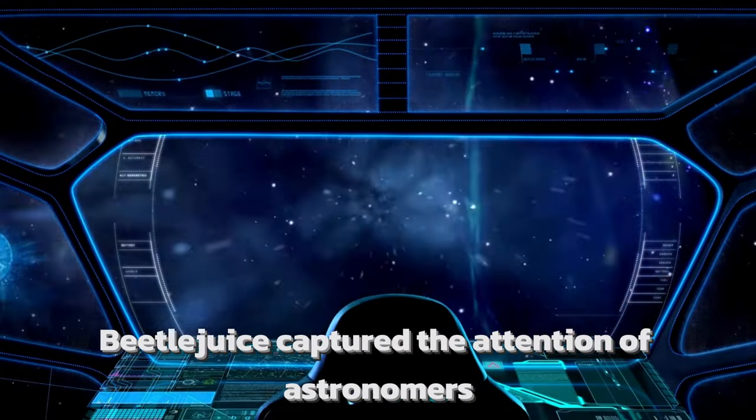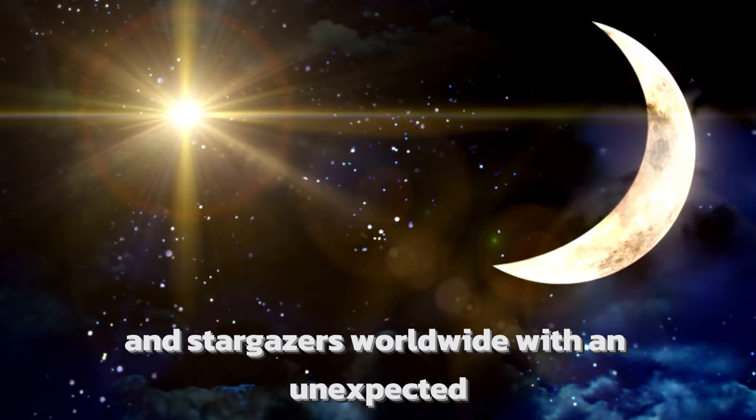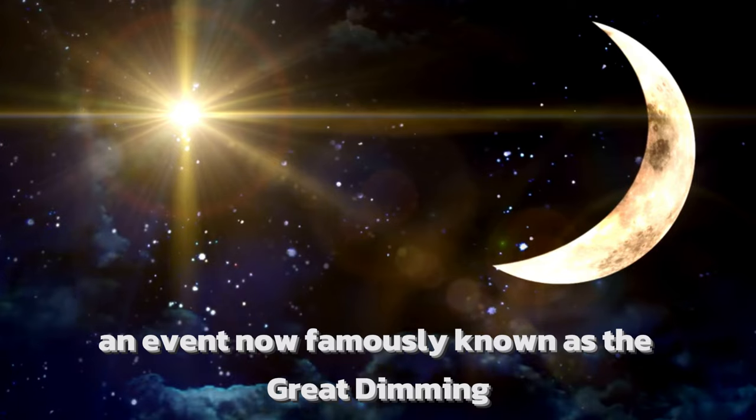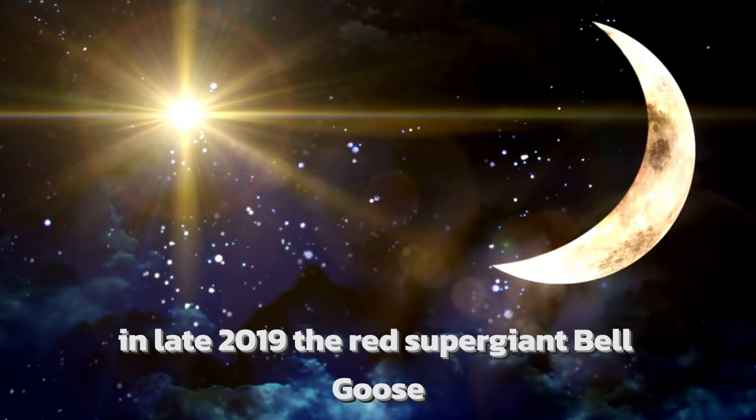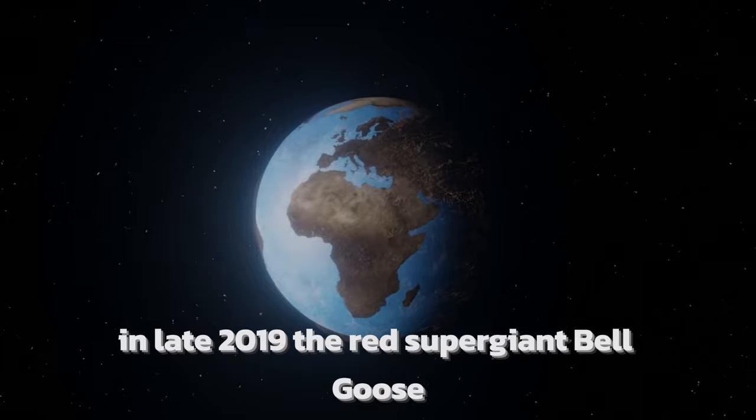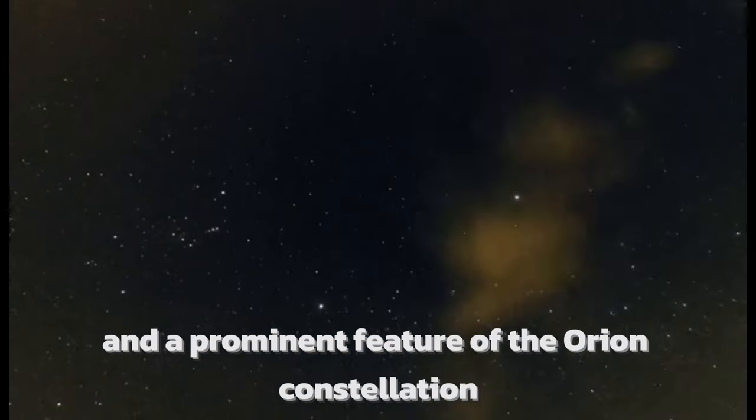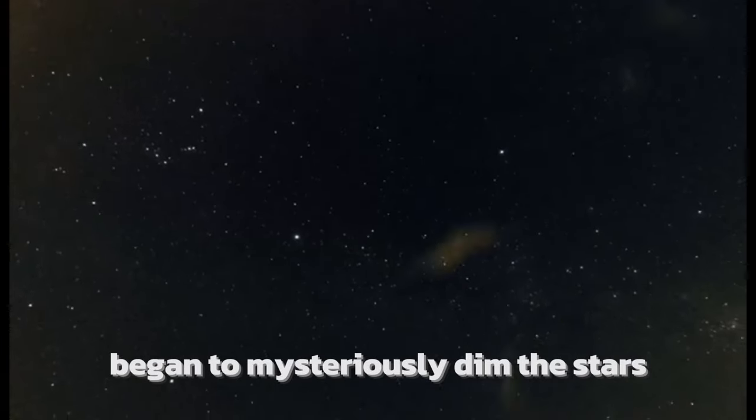In a recent groundbreaking revelation, Betelgeuse captured the attention of astronomers and stargazers worldwide with an unexpected and dramatic change in its appearance, an event now famously known as the Great Dimming. In late 2019, the red supergiant Betelgeuse, one of the brightest stars in the night sky and a prominent feature of the Orion constellation, began to mysteriously dim.